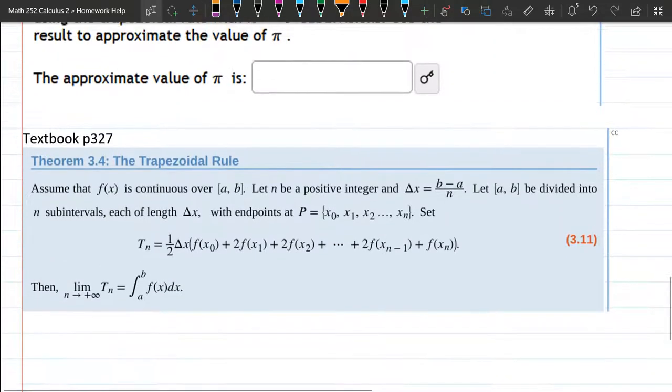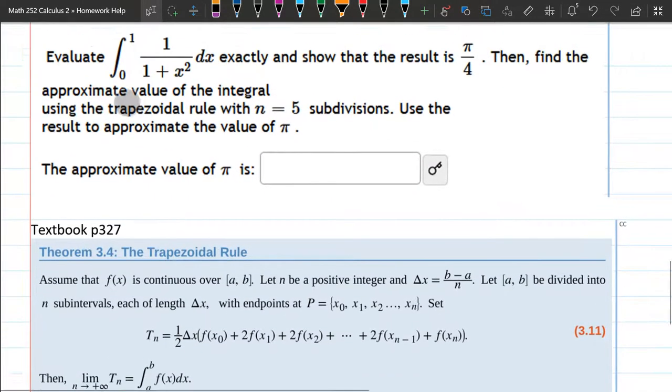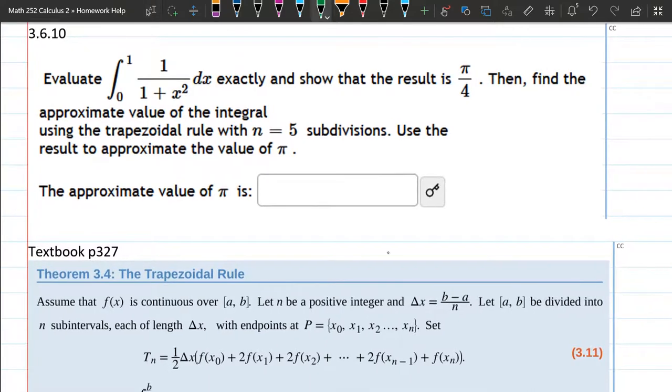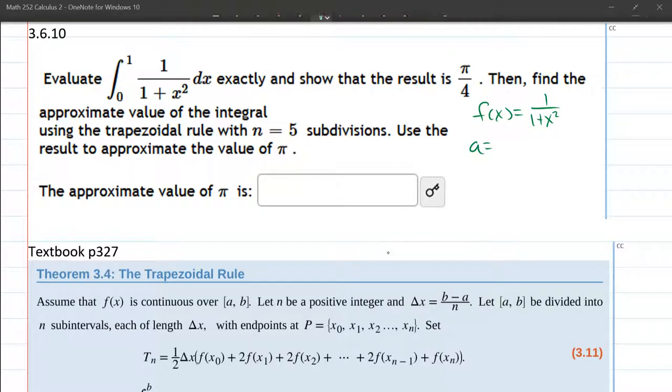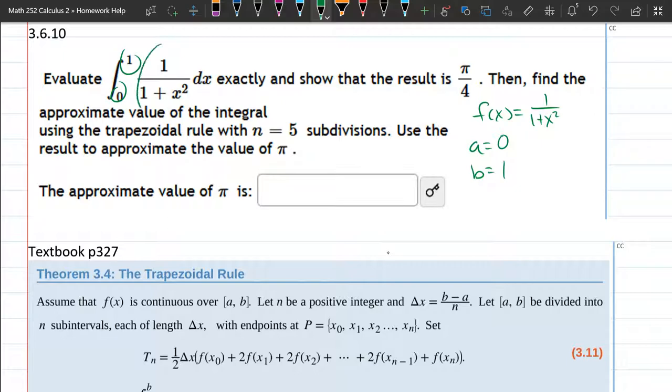We need to write down a, b, n, and f of x. We'll start with f of x—the function inside the integral: one over one plus x squared. a is the little x value, which is zero. b is the big x value, which is one. And n is the number of subdivisions, which they've already labeled as five.